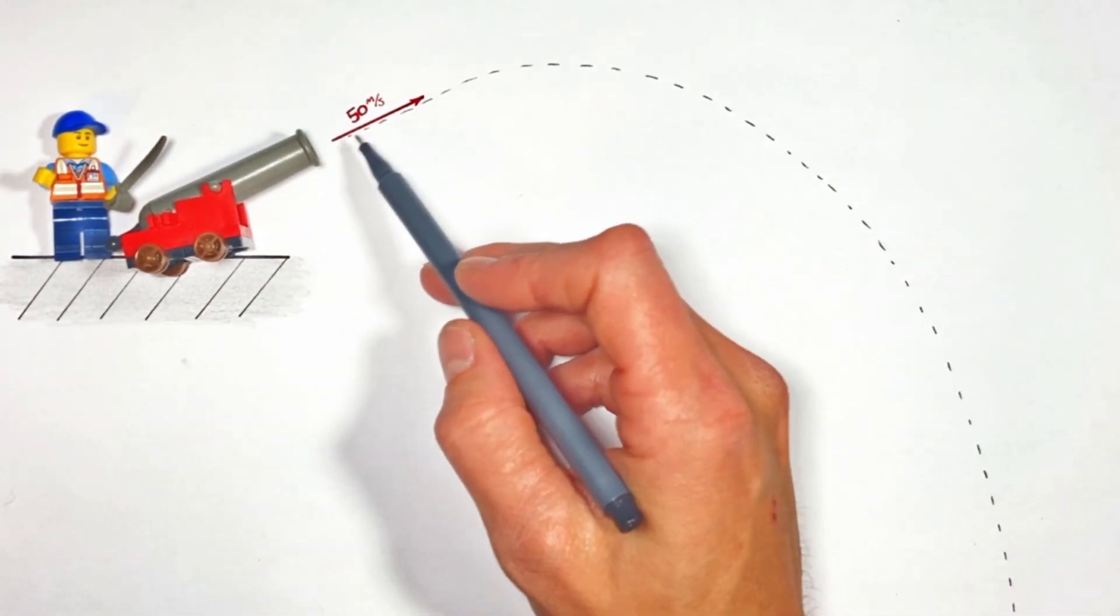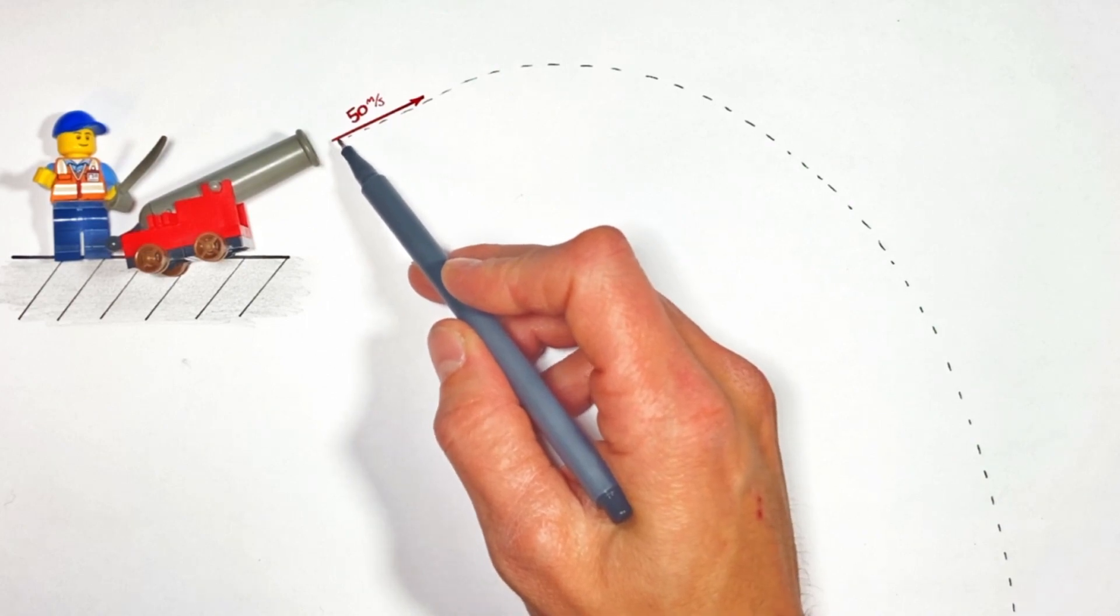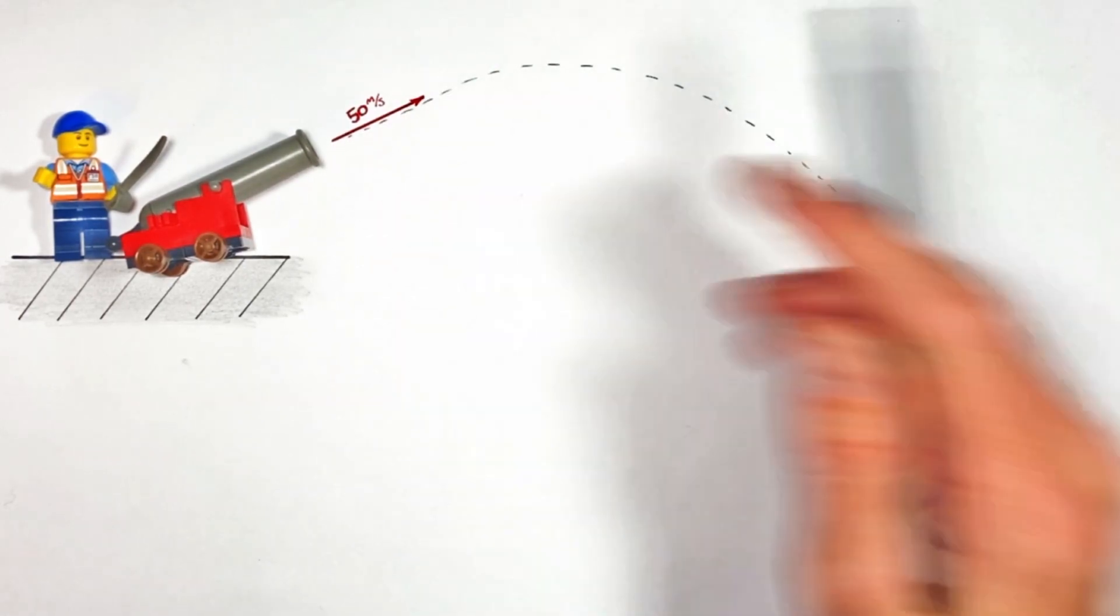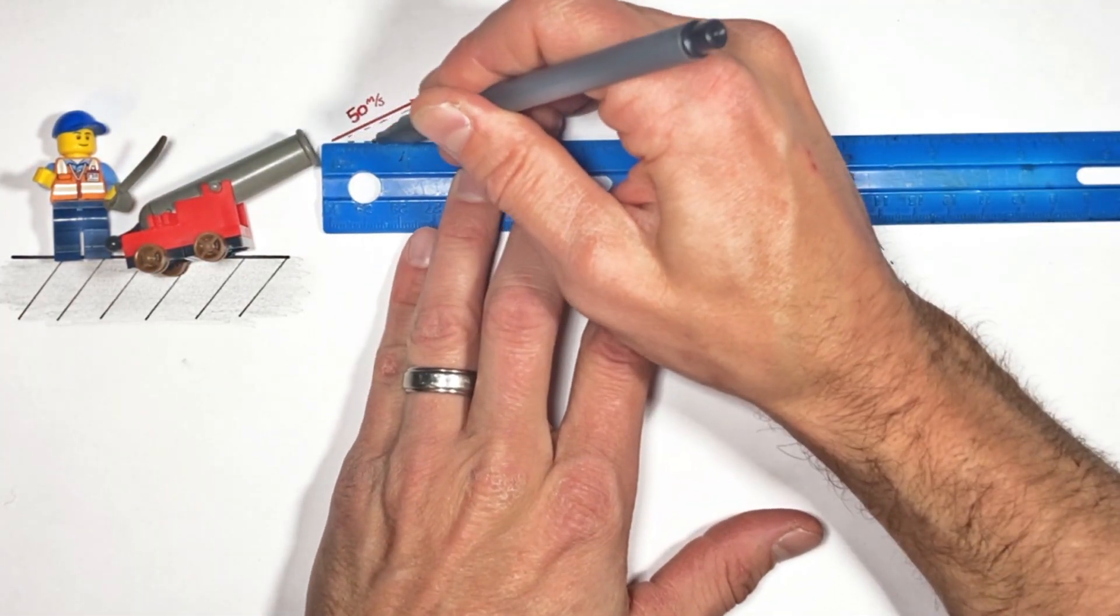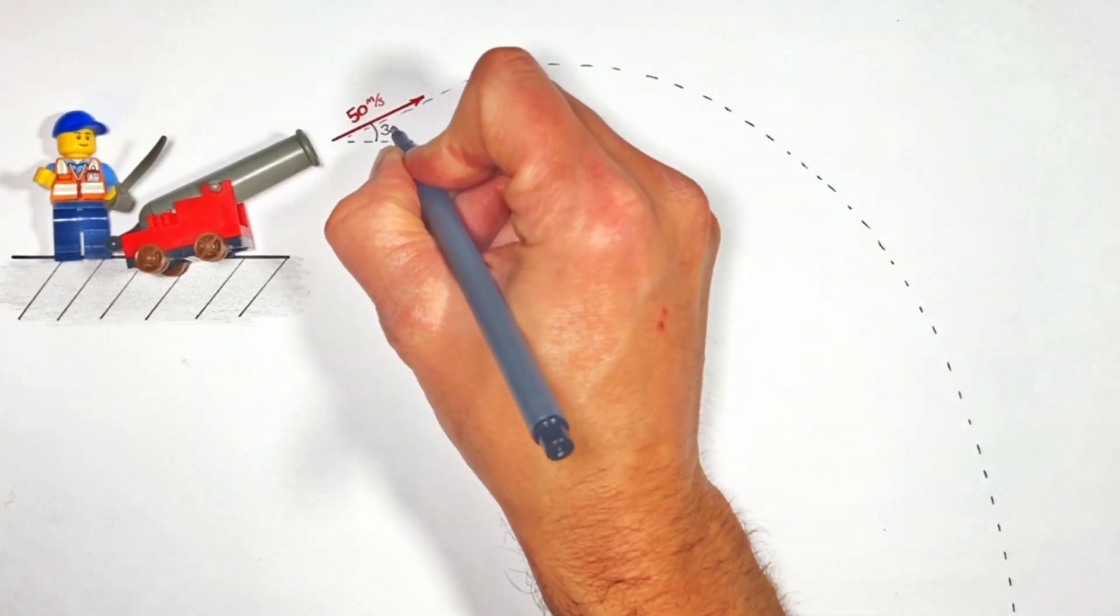Back today is our little Lego dude with a cannon. This cannon is going to fire a projectile at 50 meters per second out of the end of the cannon at an angle of 30 degrees above the horizontal axis.